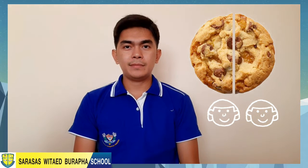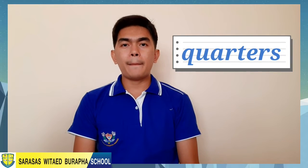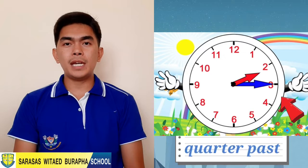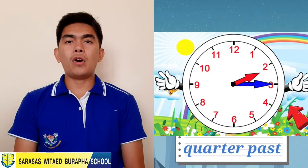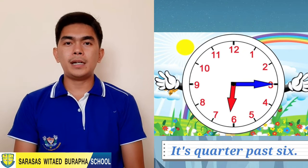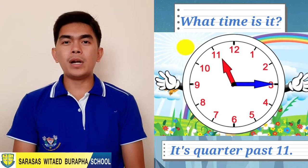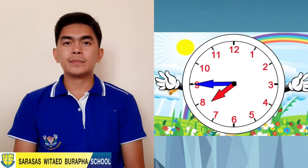When you have a big cookie and there are two people, you break it in half. But when there are four people, you break those two halves in half again, so you have four pieces. Those four pieces are called quarters. When the minute hand is pointing straight out on this side, a quarter of an hour has gone. It's a quarter past two. It's a quarter past six. What time is it? A quarter past eleven.